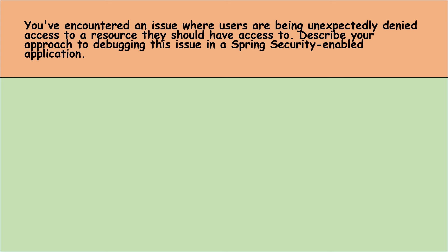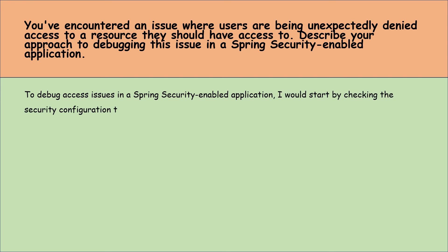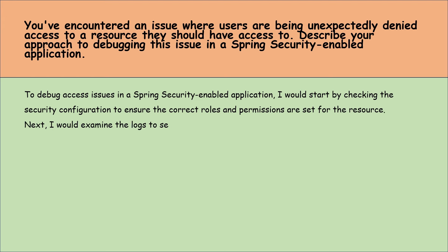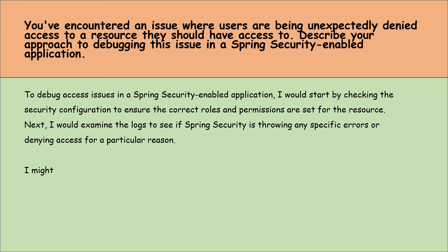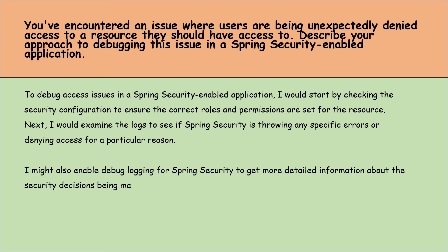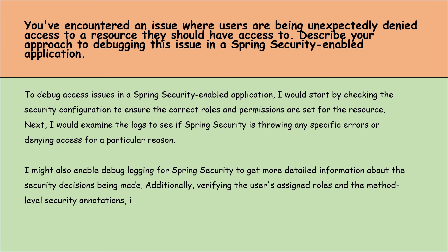You have encountered an issue where users are being unexpectedly denied access to a resource they should have access to. Describe your approach to debugging this in a Spring Security enabled application. To debug access issues, I would start by checking the security configuration to ensure the correct roles and permissions are set for the resource. Next, I would examine the logs to see if Spring Security is throwing any specific errors. I might also enable debug logging for Spring Security to get more detailed information, and verify the user's assigned roles and method-level security annotations to identify if access rules are correctly applied.